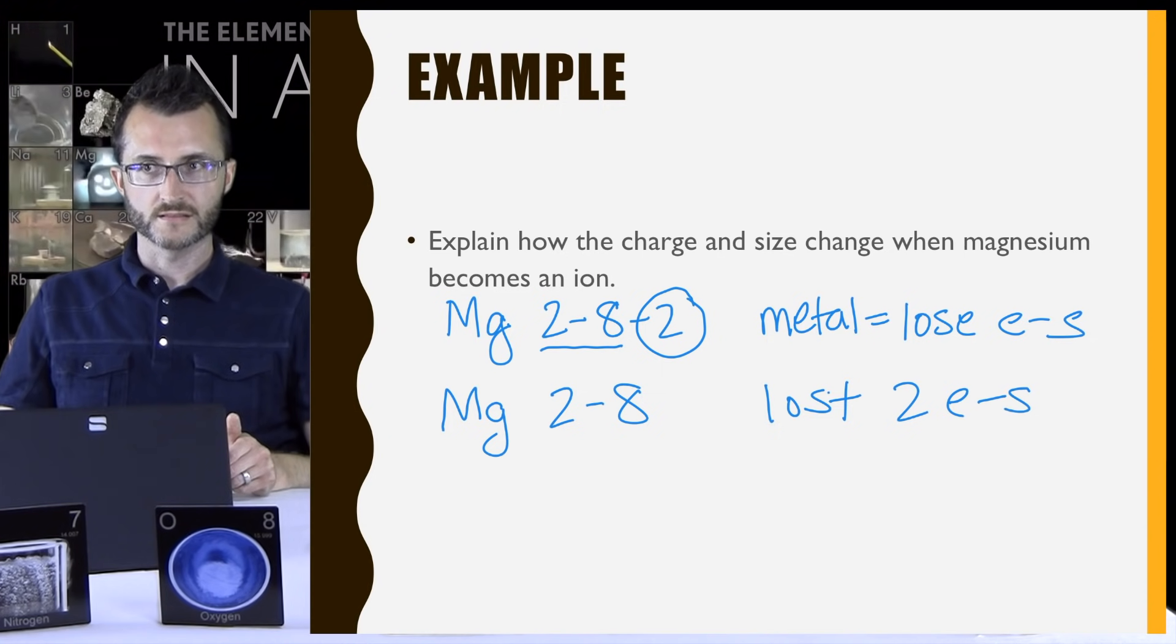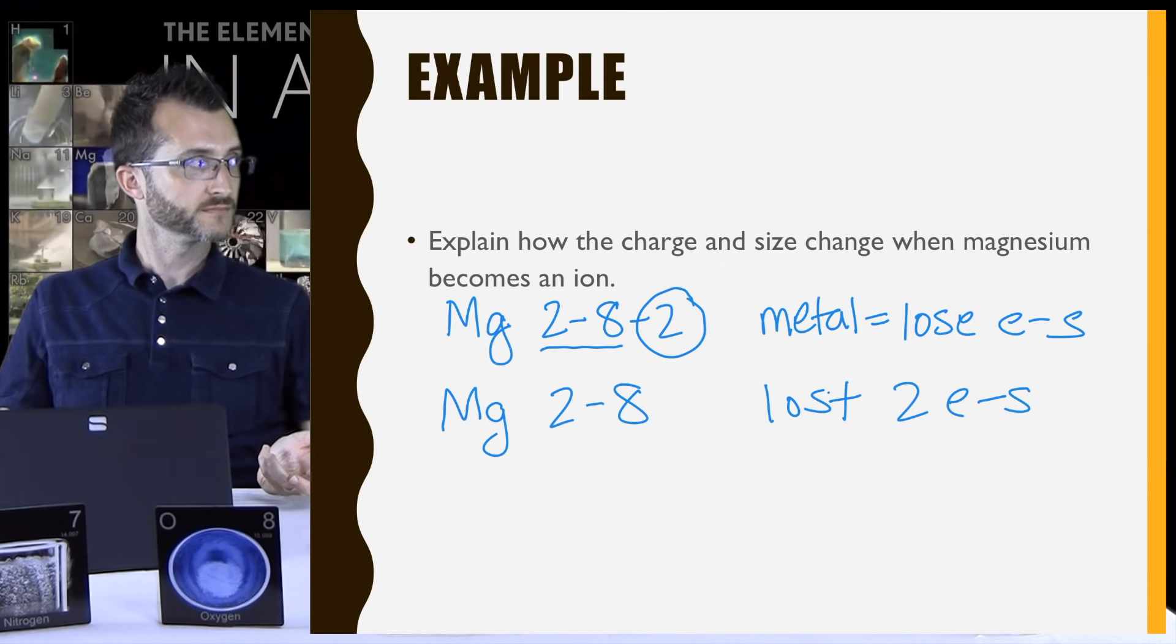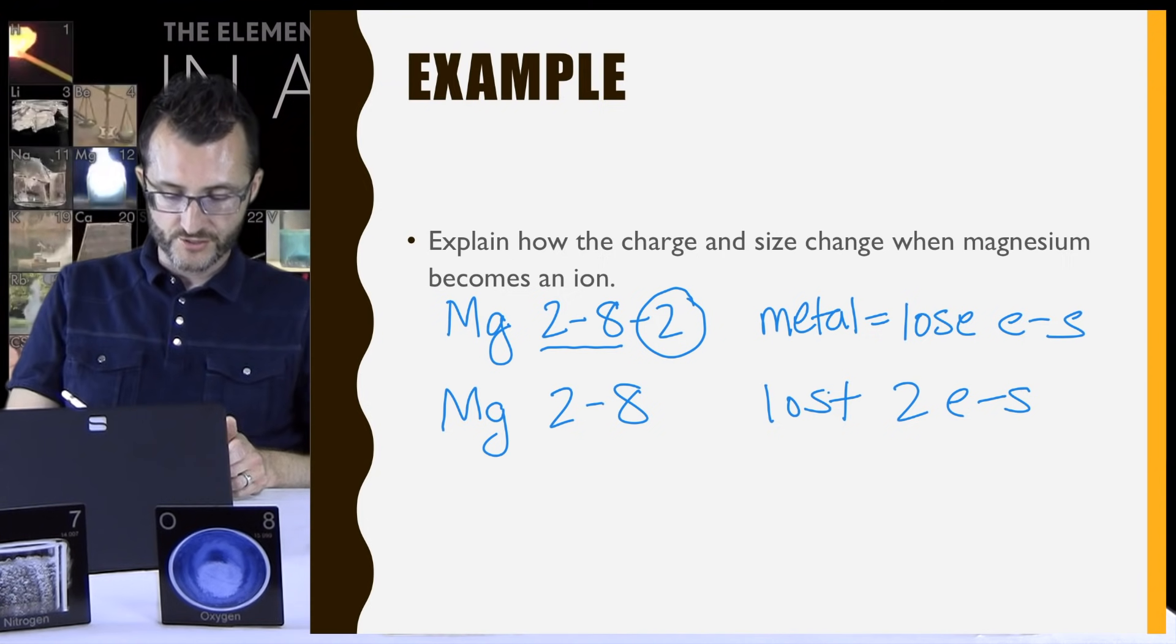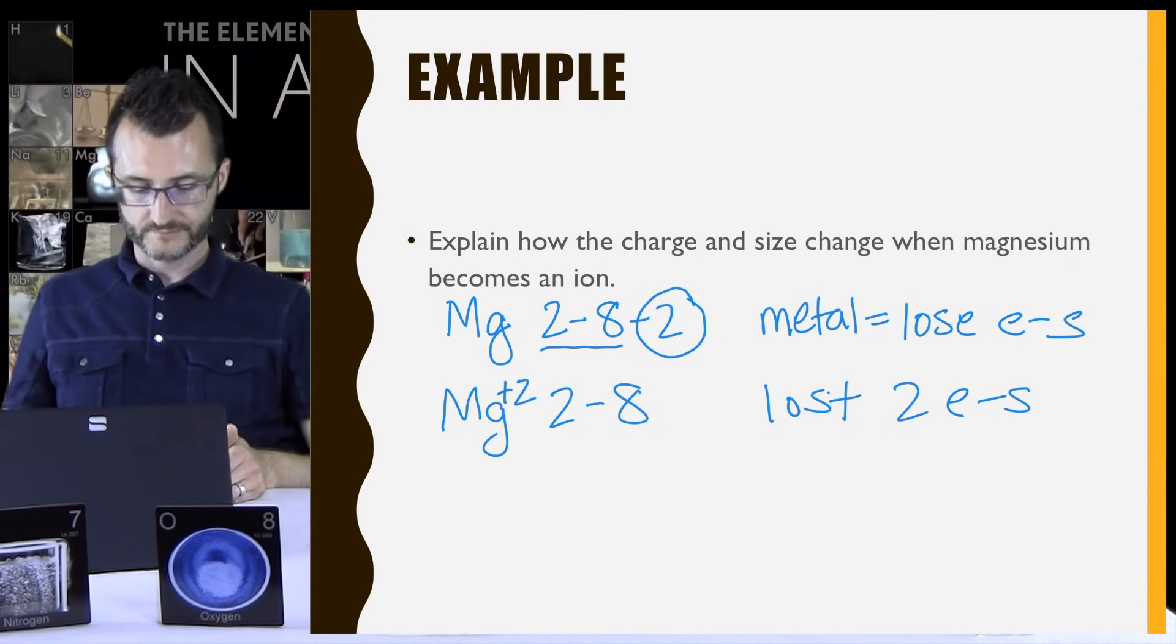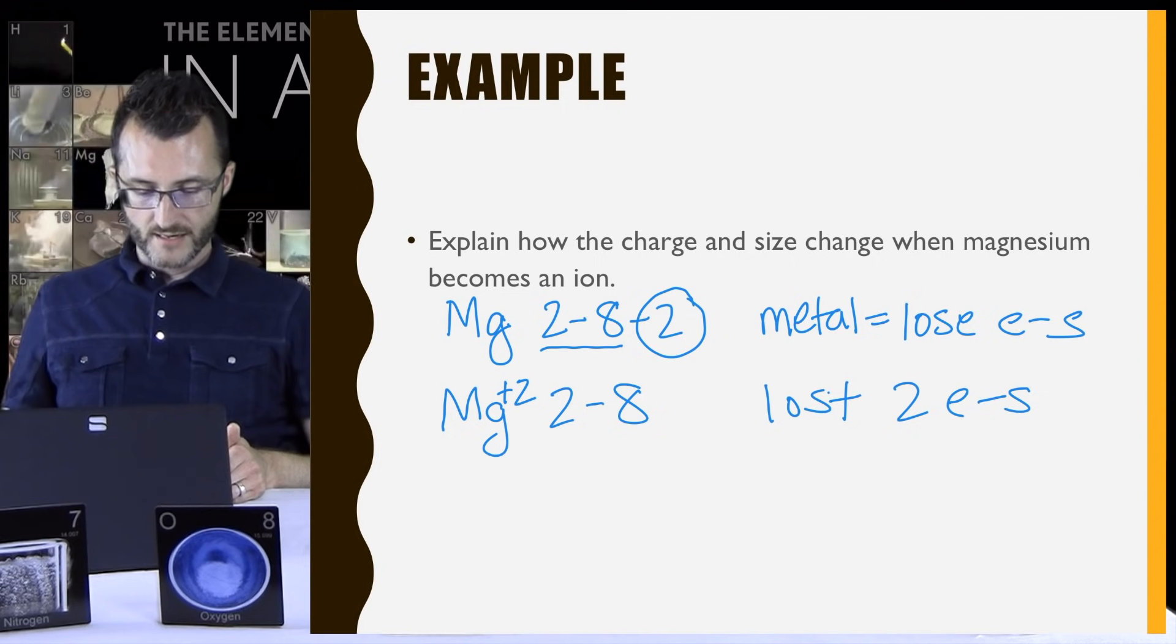Okay. So it was neutral before. It lost two electrons. What's the charge on electrons? They're negative, so I'm losing negative. Okay. So you're losing two negatives. So what would that make your overall charge? I'd have to have more protons than electrons now, so I'd be plus 2. That's right. So magnesium is a plus 2.